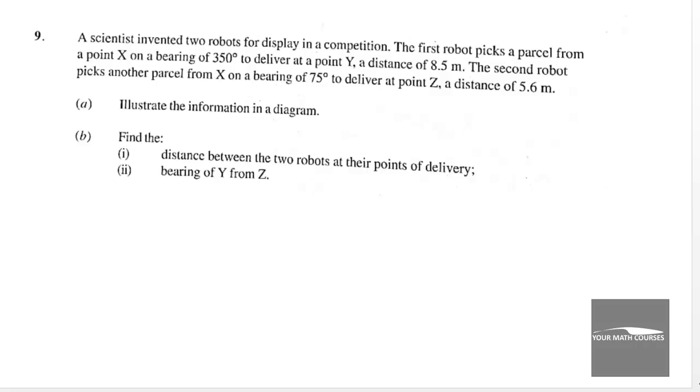This question is on bearings. A scientist invented two robots for display in a competition. The first robot picks a parcel from a point X on a bearing of 350 degrees to deliver at point Y, a distance of 8.5 meters. The second robot picks another parcel from X on a bearing of 75 degrees to deliver at point Z, a distance of 5.6 meters.